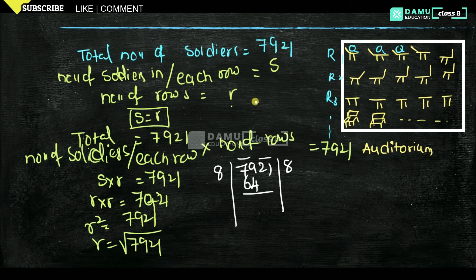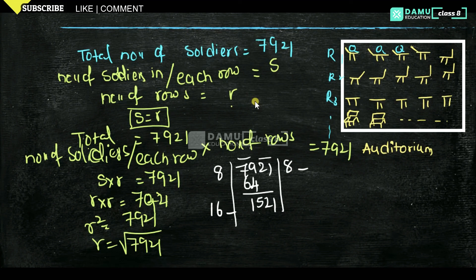Then you get a remainder. Bring down the next two digits. Then 8 times 2 is 16 — so you work with 161, 162, and so on. If you try 168 into 8, that gives 1344.